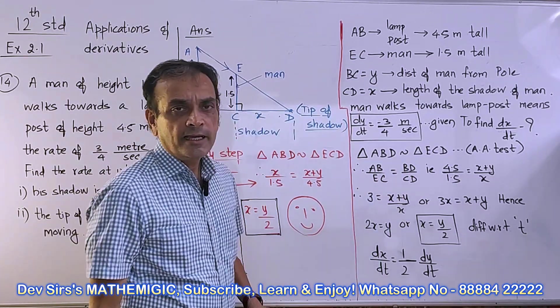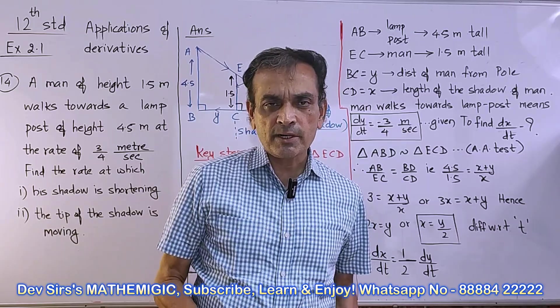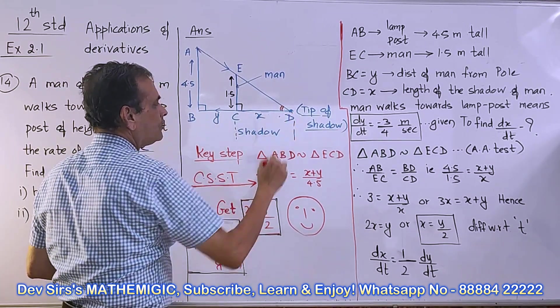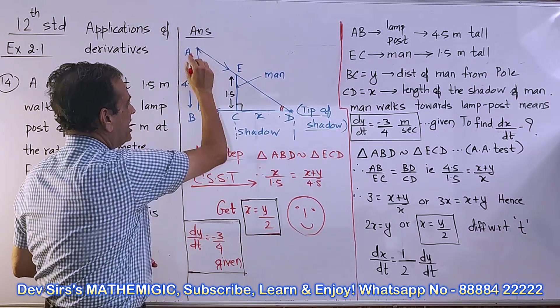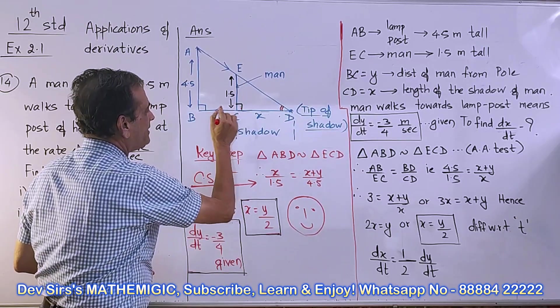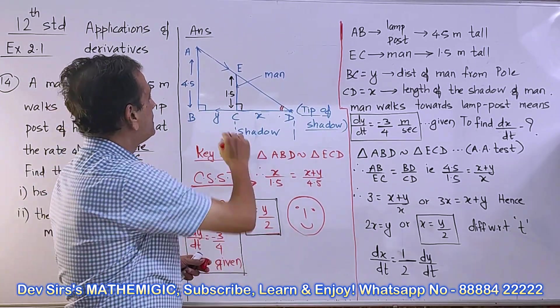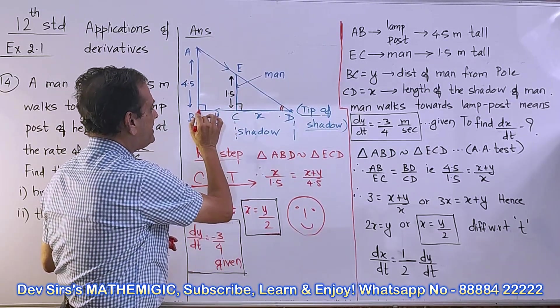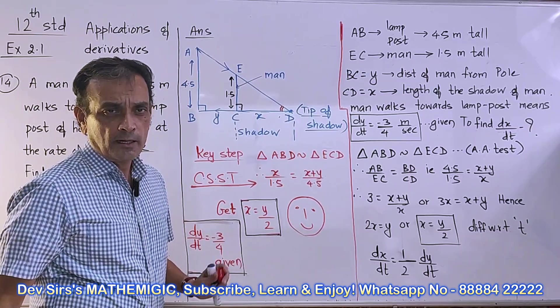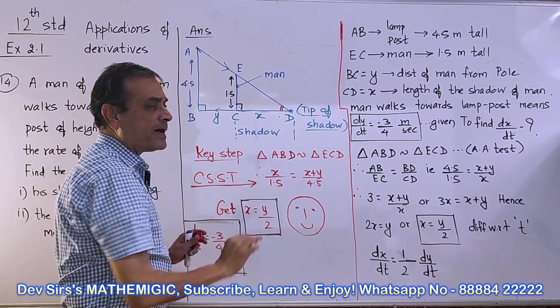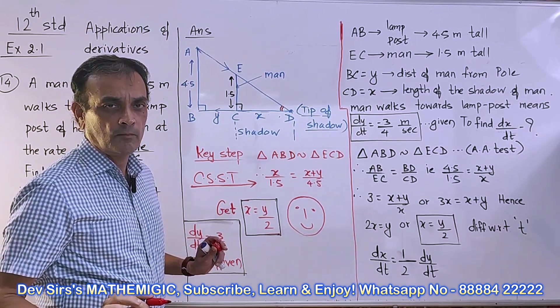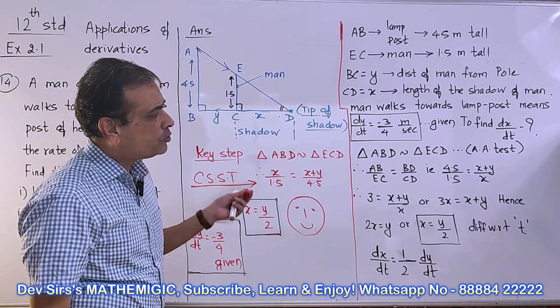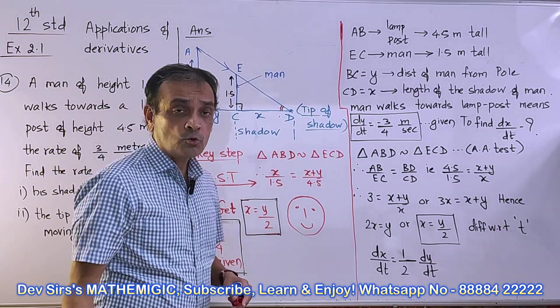Triangle ABD similar to triangle ECD by AA test. In triangle ABD and ECD, angle D congruent to angle D, common angle. Angle ABD congruent to angle ECD, each equal to 90°. Therefore the two triangles are similar by AA test. Why 90°? Because lamppost is perpendicular to the ground, and the man is standing straight, not inclined. So EC perpendicular to BD.